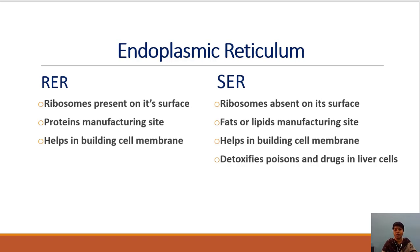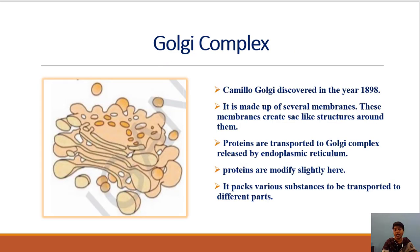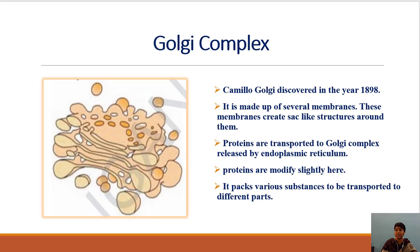Now I am moving on to the next important organelle — the Golgi complex. The endoplasmic reticulum produces proteins and lipids which are transported to this organelle. It is called the Golgi complex, Golgi body, or Golgi apparatus. It was first discovered by scientist Camillo Golgi in the year 1898.